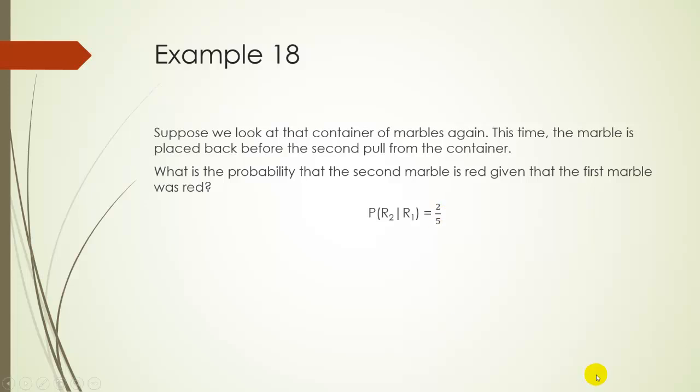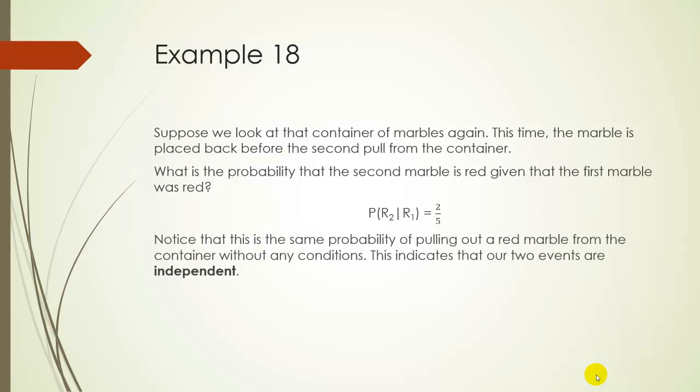So this time it's a little bit different. Since we put the marble back, it didn't change our probabilities of pulling out a red marble. In this case, we call the events independent. Our first example, where we threw away the marble, we didn't replace it, would be an example of a dependent event.